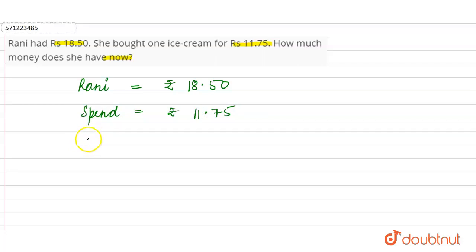To find that, we have to subtract total money she had minus her spendings, which is equal to savings or the money she has right now. Total money is rupees 18.50, from that she has spent rupees 11.75.